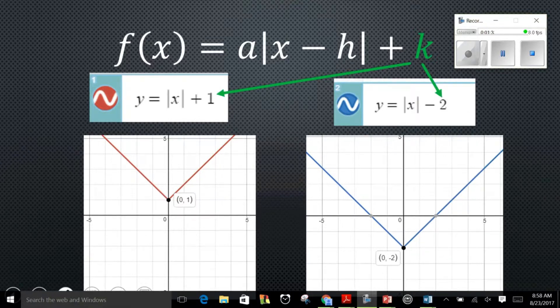So to sum up the k value, plus a value will move it up and minus a value will move it down.